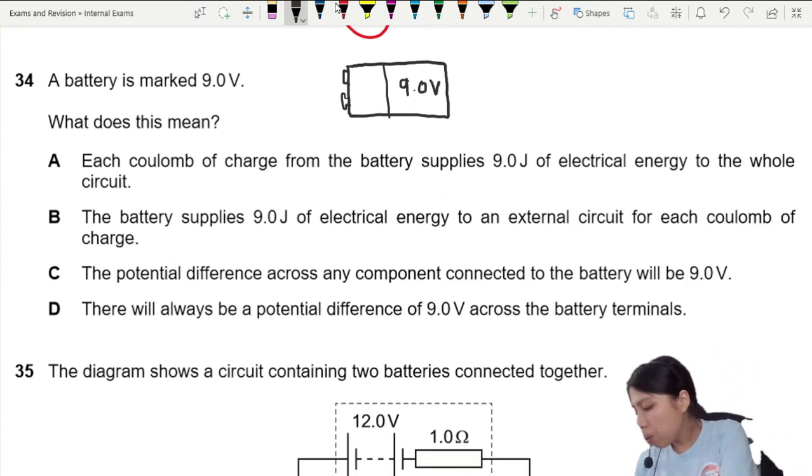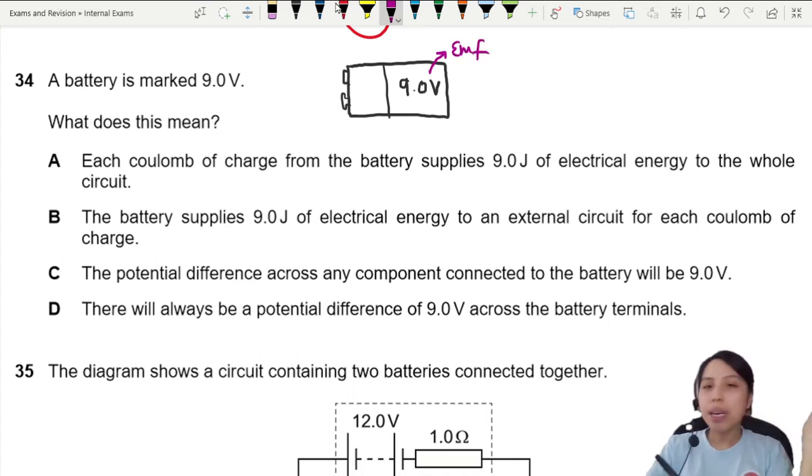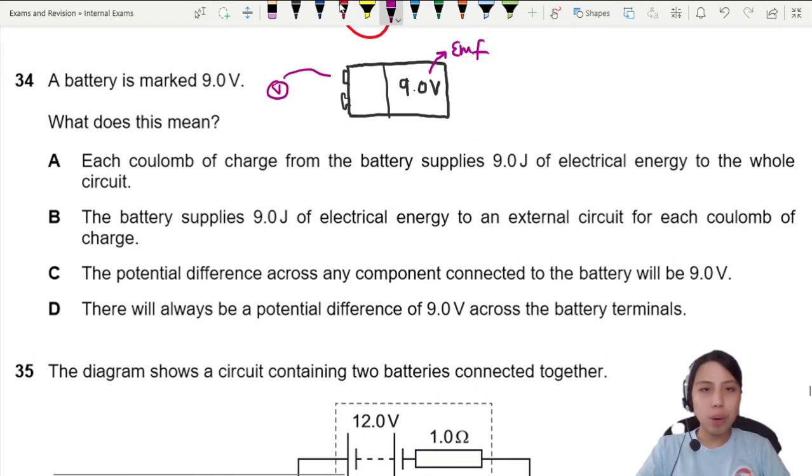Not what you actually would get in a circuit, but EMF. So if you connect a voltmeter stand alone, poke to this side, poke to this side, you will read 9 volts.